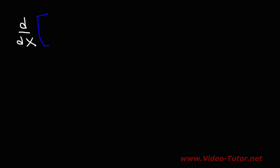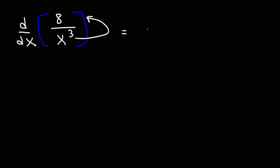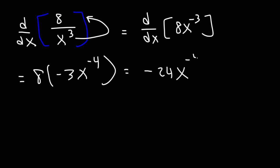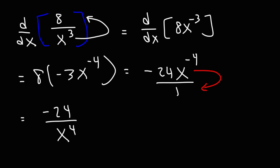Here's another one: find the derivative of 8 over x to the third power. Let's rewrite the expression — this is the same as finding the derivative of 8x to the minus 3. The derivative of x to the minus 3 is negative 3 times x raised to the negative 4. Then 8 times negative 3 is negative 24. Moving the x variable to the bottom, the final answer is negative 24 over x to the fourth power.